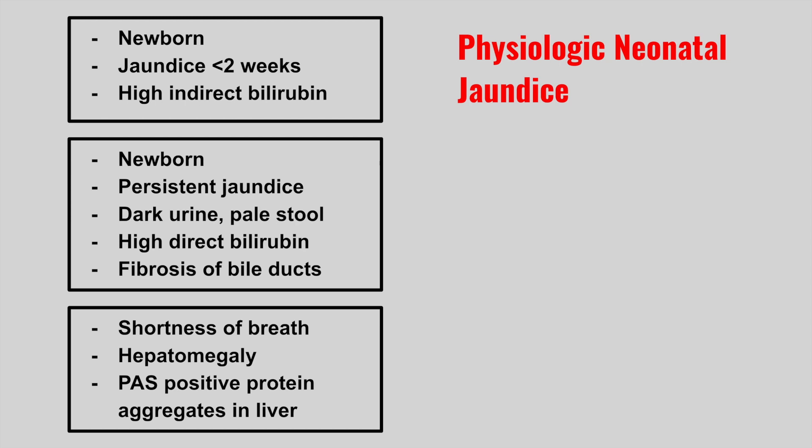The next patient is also a newborn, but this time they have persistent jaundice, dark urine, pale stool, high direct bilirubin, and fibrosis of the bile ducts. This is biliary atresia.